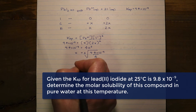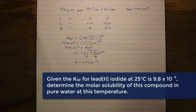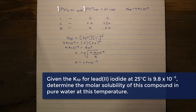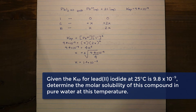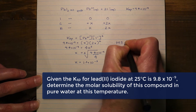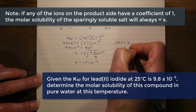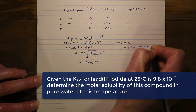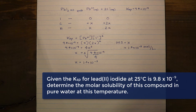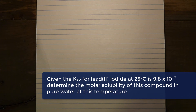x represents the concentration of lead ions at equilibrium — that is, at the point of saturation. Since the ratio between lead(II) iodide and lead(II) ions is 1-to-1, the amount of lead(II) iodide that dissociates equals x. Therefore, the molar solubility of this compound at this temperature is 1.3 times 10 to the negative 3 moles per liter.